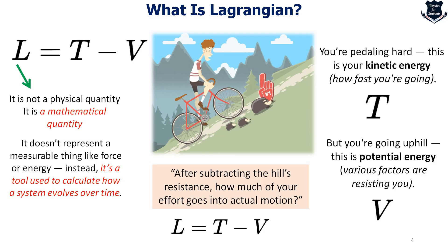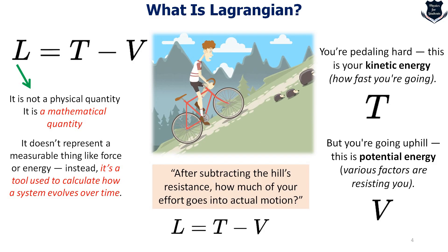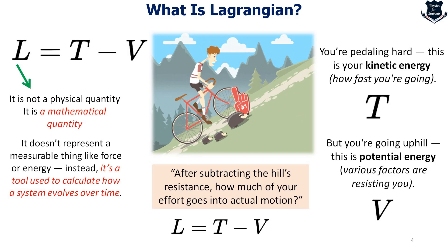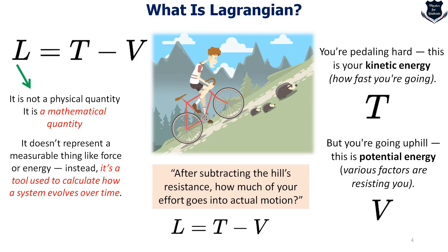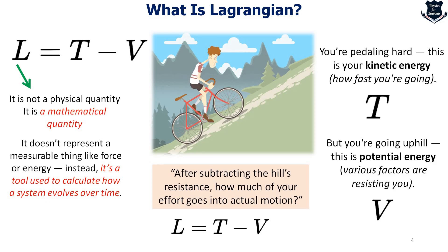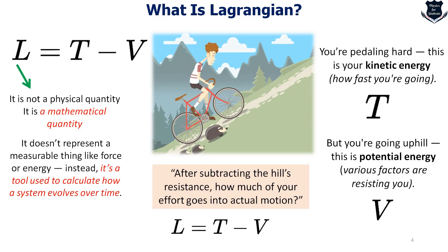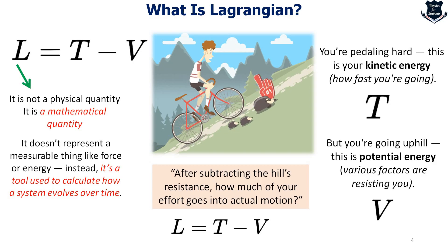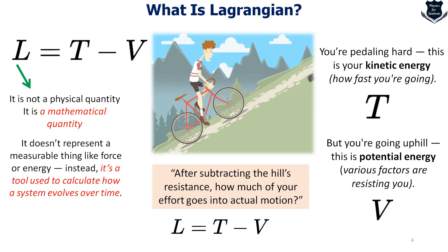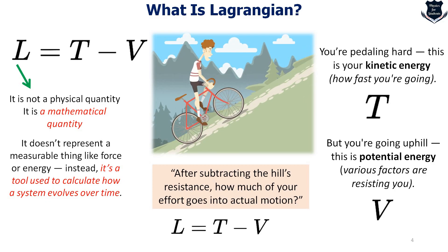You must be wondering why there is a T minus V and not something which is a plus. The reason is that after subtracting the hill's resistance, how much of your effort goes into actual motion. So what is left of your effort actually goes into moving you forward. This is exactly what the Lagrangian does. It separates what resists the motion from what drives it.